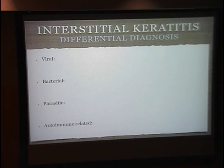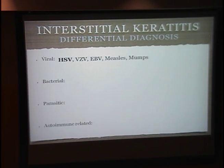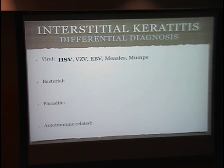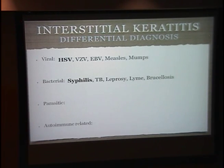I like to think of the differential for interstitial keratitis in four main categories: viral, bacterial, parasitic, and autoimmune-related. Viral is the most common, and within viral, HSV is the most common cause in the United States currently. Other viral etiologies include VZV (zoster), EBV, and more rarely measles and mumps. Bacterially, congenital syphilis was really pathognomonic — hand-in-hand with interstitial keratitis many years ago — and is still a common cause, but less so now than HSV. Also acquired syphilis, and then rarer causes like TB, leprosy, and Lyme disease.